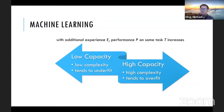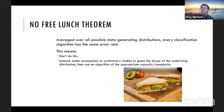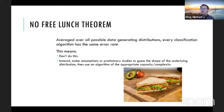This leads to the no free lunch theorem: over all possible data-generating distributions, every classification algorithm has the same error rate. In other words, if you take a low-capacity algorithm like linear regression and train it on every possible problem, average the performance, then do the same with a high-capacity algorithm like a deep neural network, the average error rate will be the same regardless of which model you use. This means it's important to choose an appropriate model and keep an eye on the balance between overfitting and underfitting.